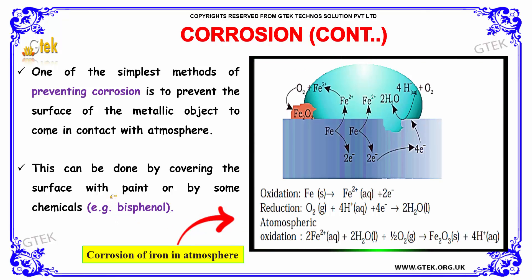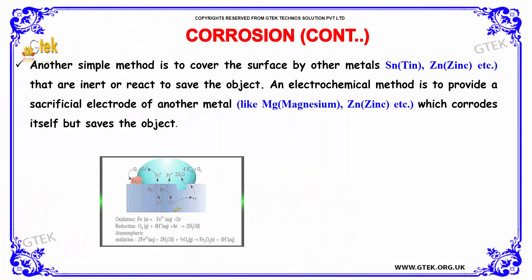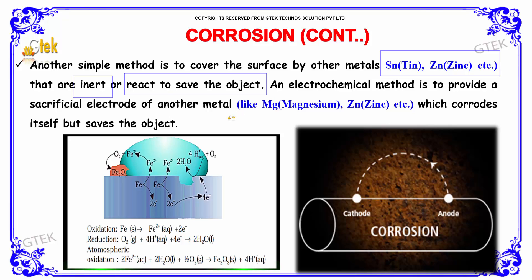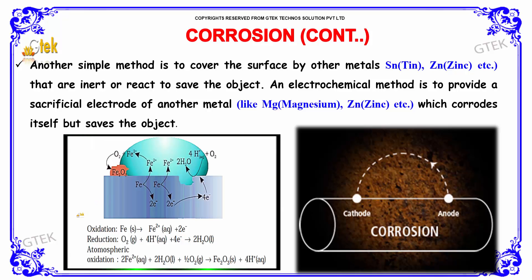Another simple method is to cover the surface with other metals such as tin or zinc, which are either inert or react to save the object from corrosion. An electrochemical method is to provide a sacrificial electrode of another metal, such as magnesium or zinc, which corrodes itself but saves the object.